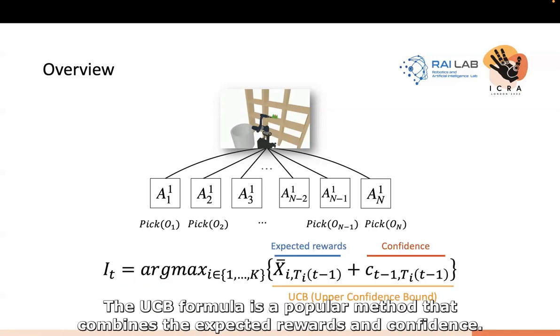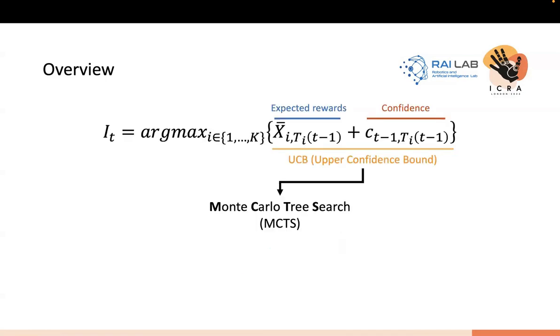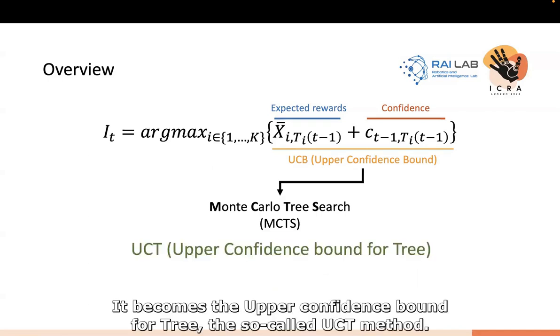The UCB formula is a popular method that combines the expected reward and confidence. We can choose an action that makes the UCB the maximum. Applying this to MCTS, it becomes the upper confidence bound for tree, the so-called UCT method.